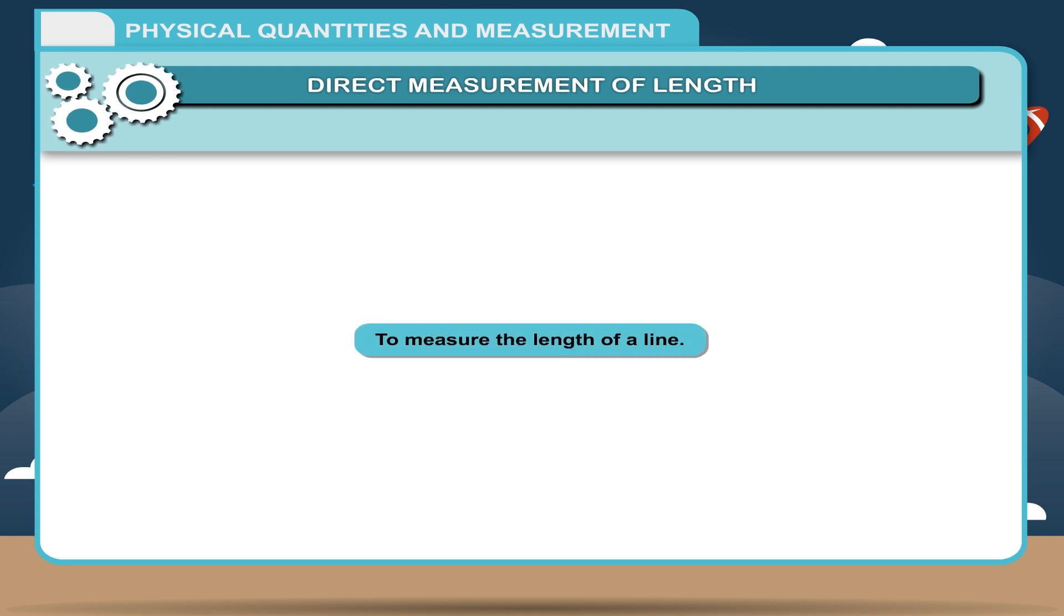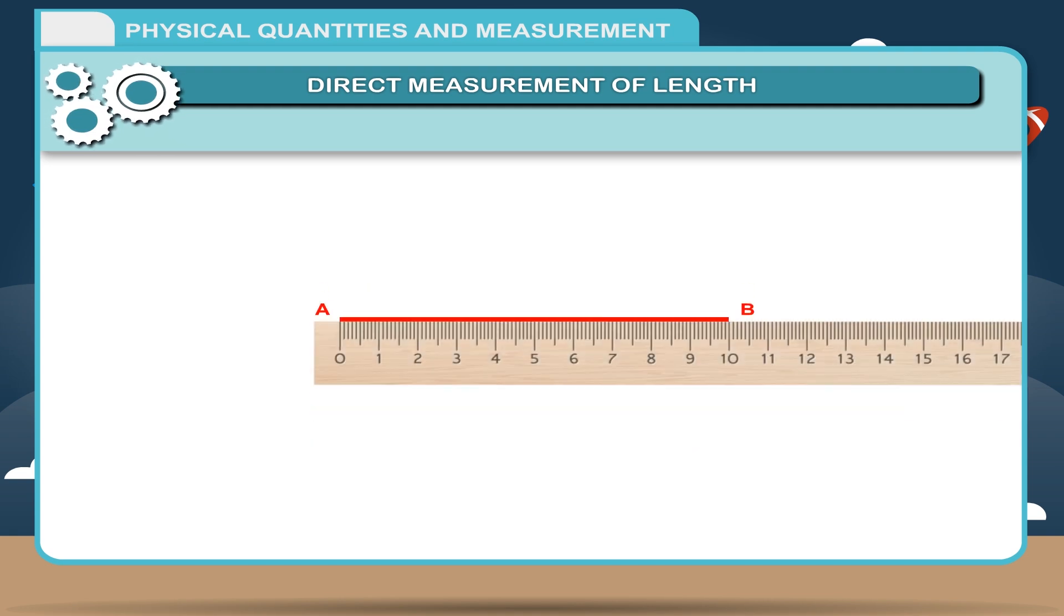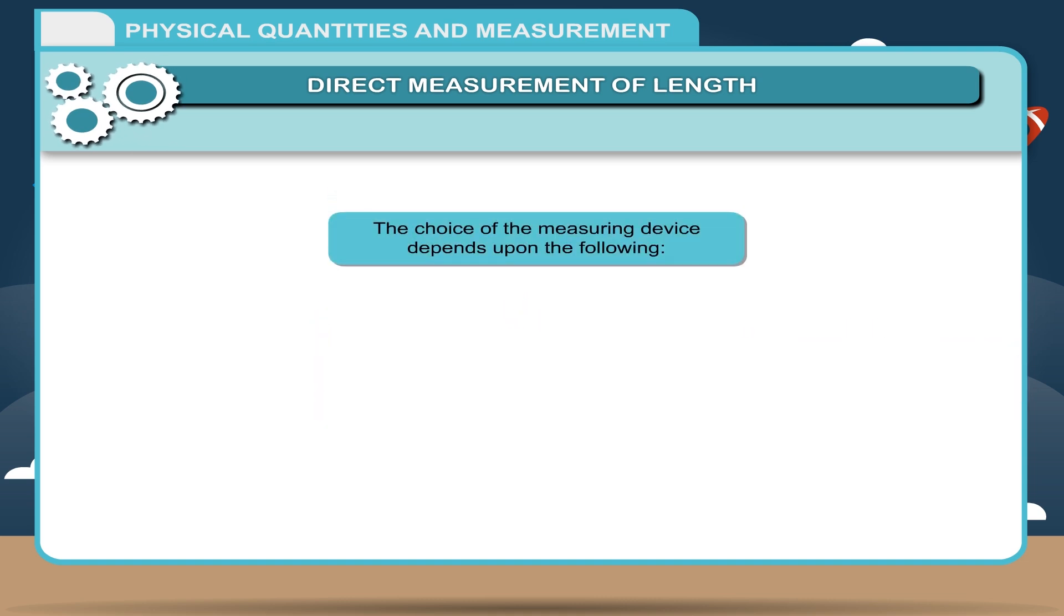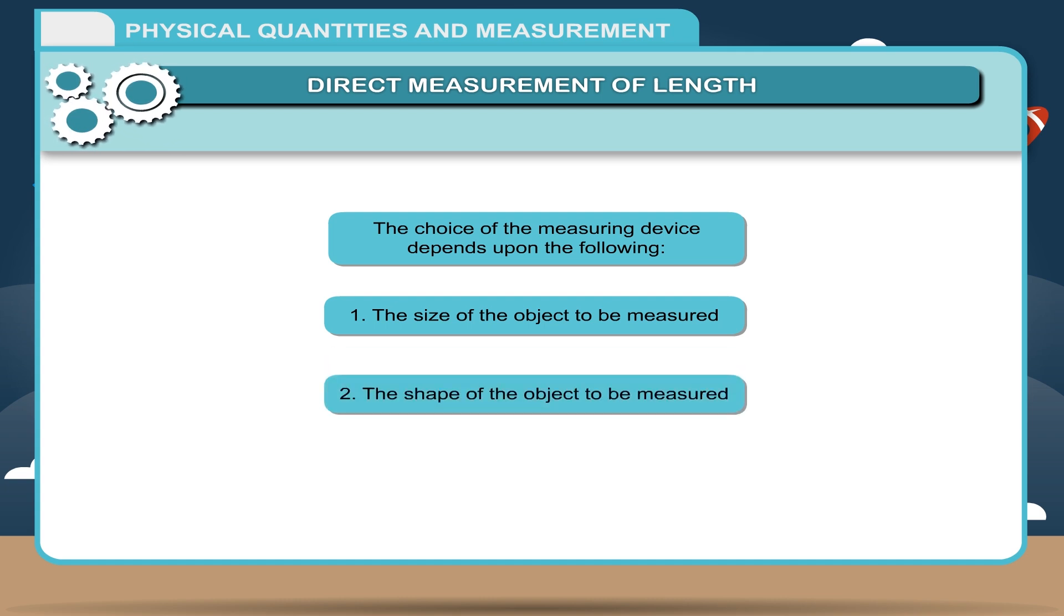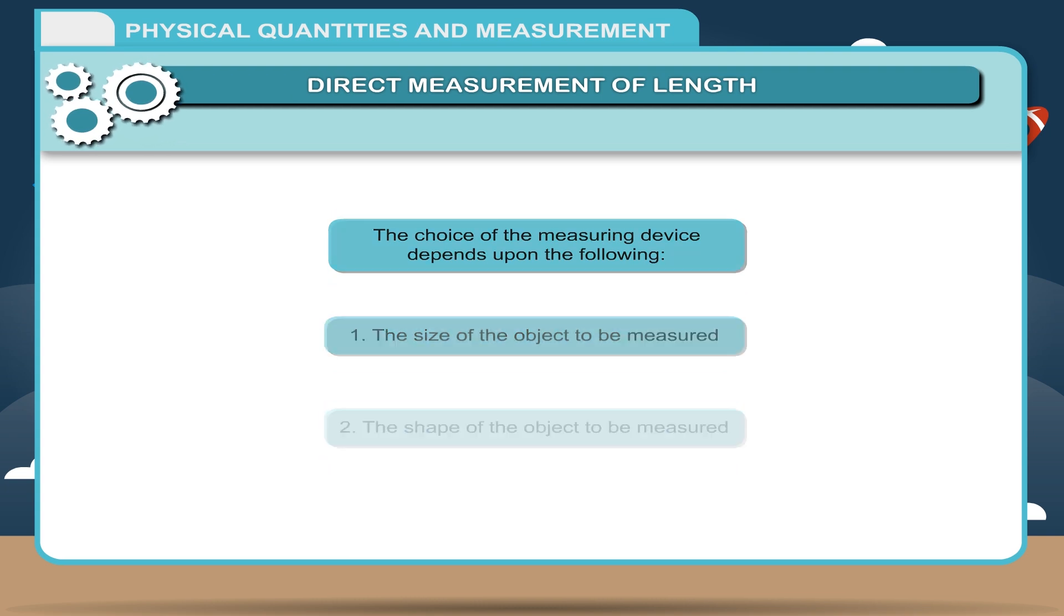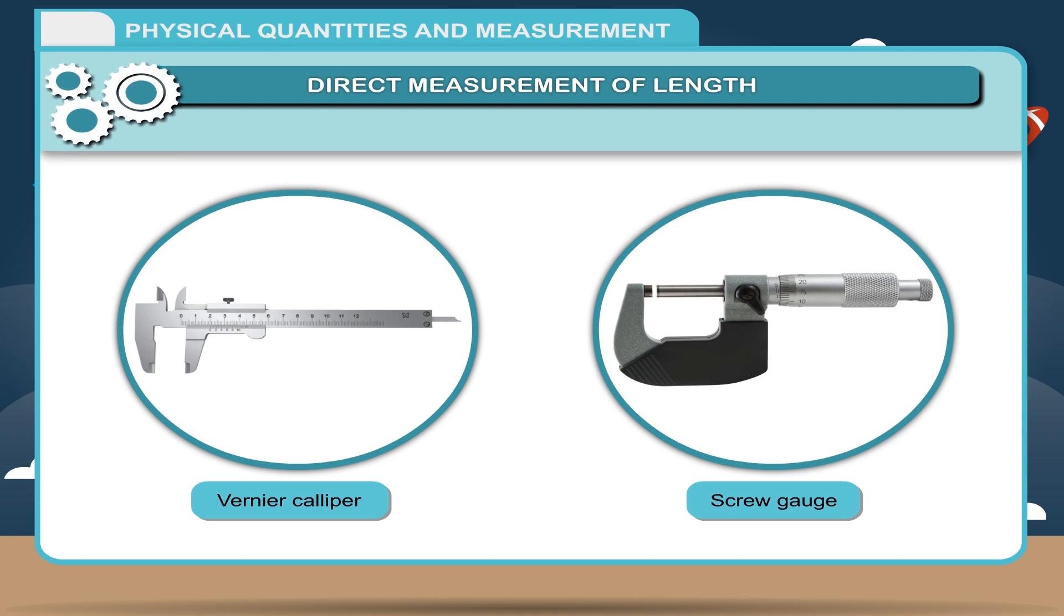Activity: To measure the length of a line. Place a scale along the line AB such that zero on the scale coincides with point A. Note down the reading on the scale which coincides with point B. This reading gives you length of the line AB. To make accurate measurement, we require a proper measuring device. The choice of the measuring device depends upon: The size of the object to be measured, the shape of the object to be measured, and the degree of accuracy required. Vernier calipers and screw gauze are two such instruments which are used to measure very small lengths accurately such as the diameter of an electric wire.